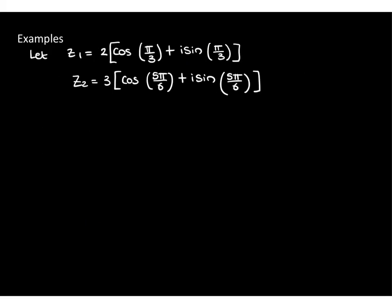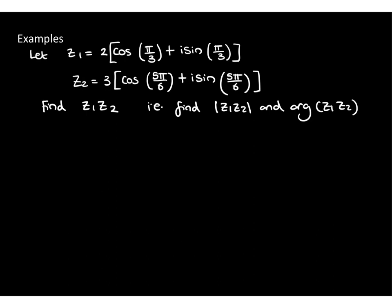Let's look at this in action. Here are two complex numbers written in modulus-argument form, and we're going to use the rules we proved to find the product z1z2. This is the beauty of these rules — we do not have to go back to basics and do a double-bracket expansion. We just find the modulus and argument of z1z2 and piece it together. So |z1z2| = |z1| × |z2| = 2 × 3 = 6.